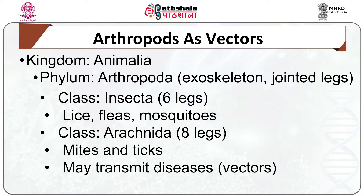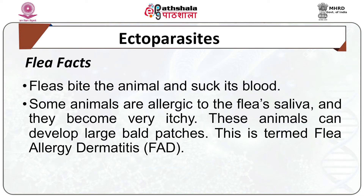Among arthropods, class Insecta and class Arachnida are most significant as far as parasitic relationships with vertebrates are concerned. We will start with class Insecta — first, with fleas. Adult fleas are blood-sucking ectoparasites living on the surface of vertebrates, feeding on blood.